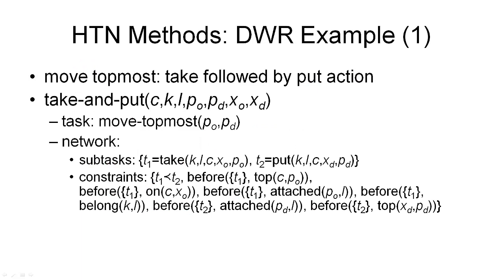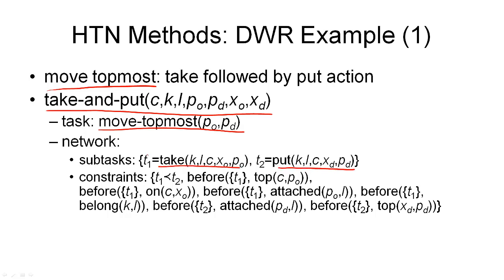Let's look at an example of an HTN method. We'll use an example from our DocWorker robot domain — the example we've seen previously as an STN method. We want to move the topmost container from one pile to another, and this is again a take action followed by a put action. The first three parts are actually the same as before: we have a method name describing this method, then we have a task that is accomplished by this method, and the method name contains the same variables representing the same objects as before. What is new is the network of subtasks, where I've given these subtasks names that allow me to refer to them in the constraints — the first subtask is called T1 and the second one is called T2.